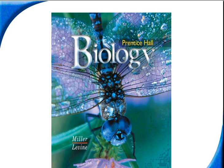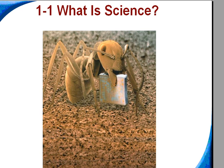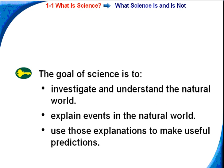we have, what is science? Okay, in case you're wondering what that is, that is an ant carrying a microchip. So the goal of science is three things: to investigate and understand the natural world, to explain events in the natural world, and to use those explanations to make useful predictions.